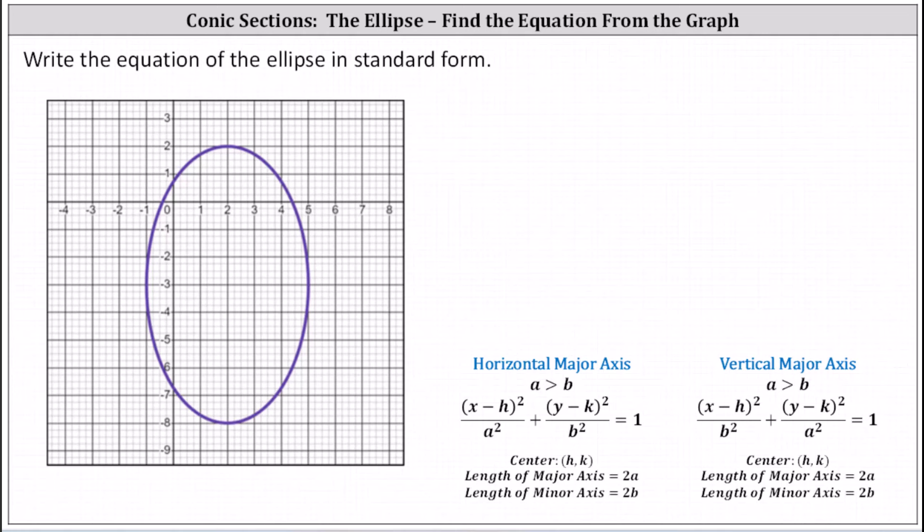Write the equation of the ellipse in standard form. Let's begin by analyzing the ellipse. Every ellipse has a major axis and a minor axis that cut the ellipse in half. The major axis is the longer axis. The minor axis is the shorter axis.